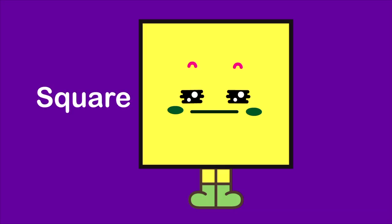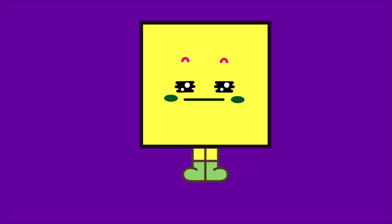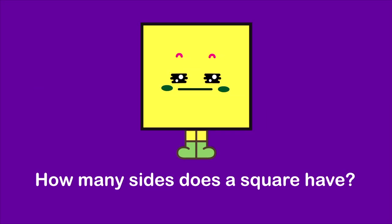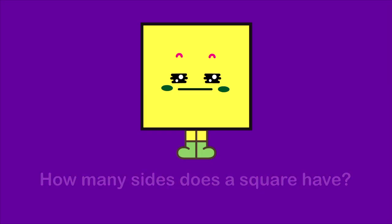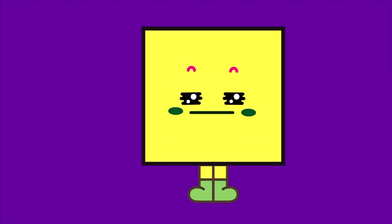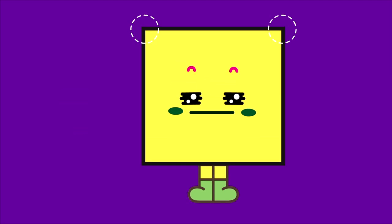Square. How many sides does a square have? One. Two.